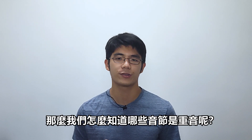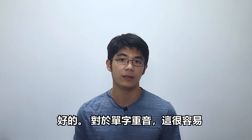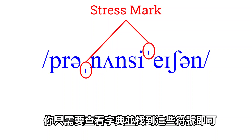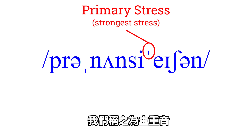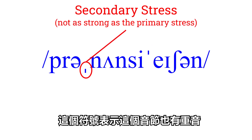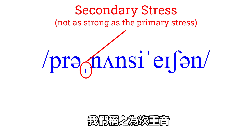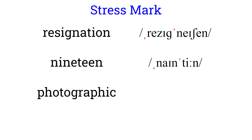So, how do we know which syllables are stressed? For word stress, it's very easy — you just have to look in the dictionary and find these symbols. This symbol means the syllable carries the strongest stress, which is the longest and loudest. We call it the primary stress. This symbol means the syllable also carries a stress, but not as strong as the primary stress. We call this the secondary stress. You can look at these words: resonation, 19, photographic.